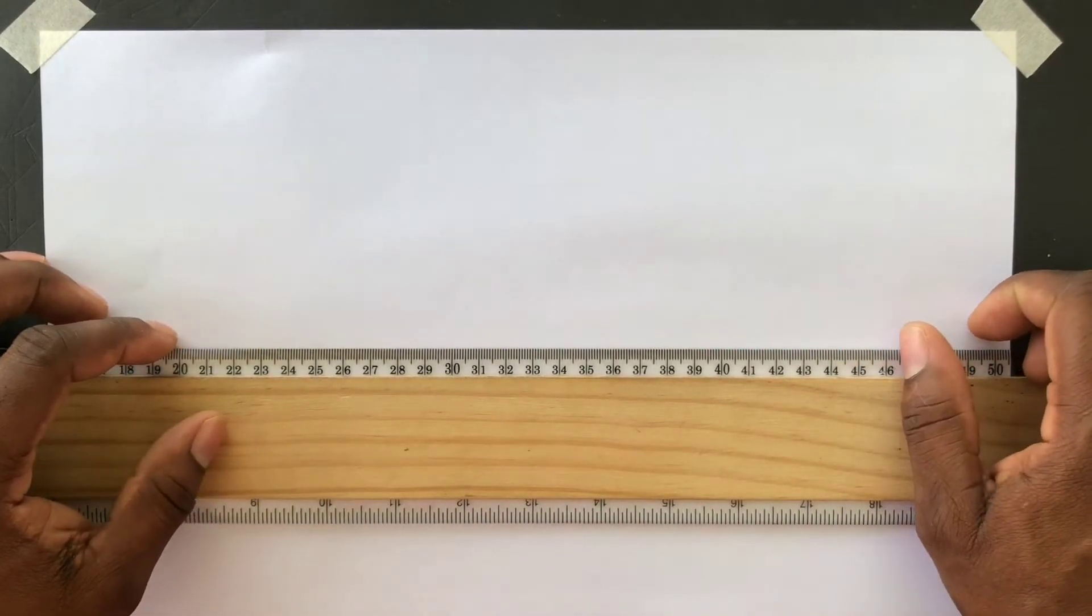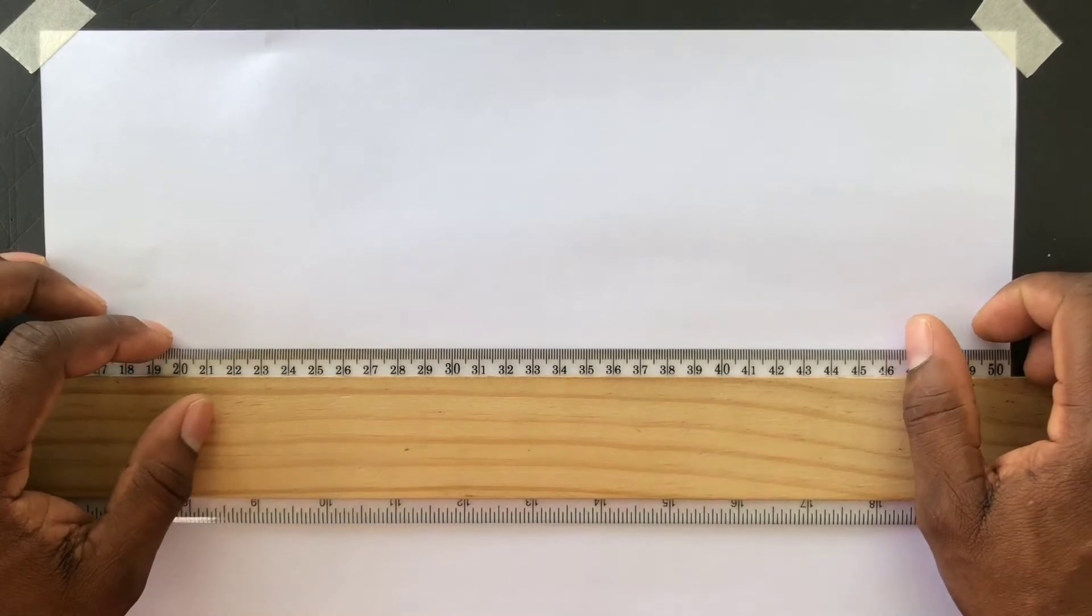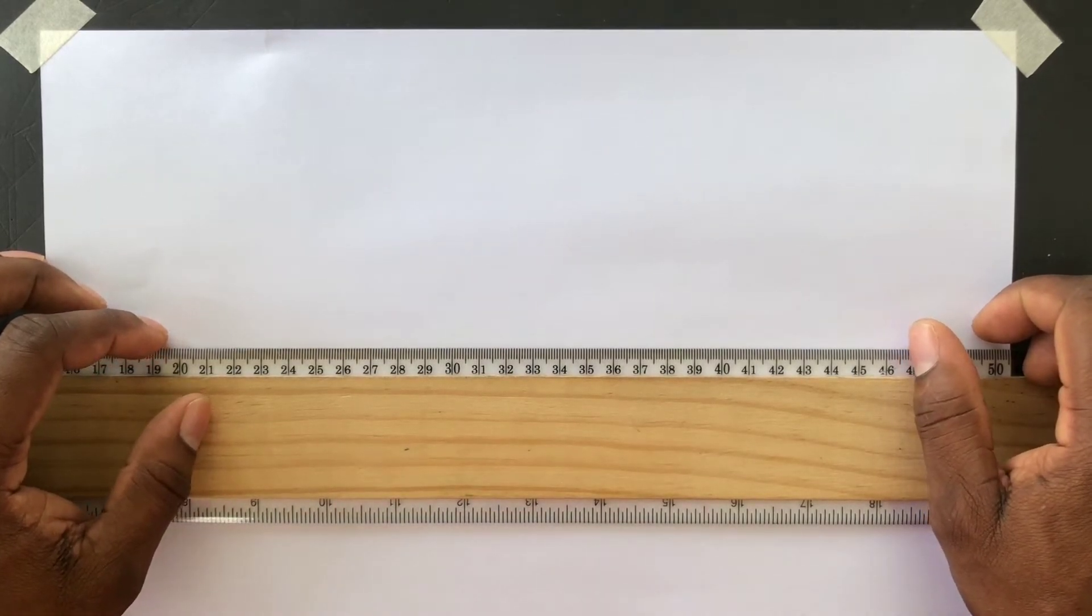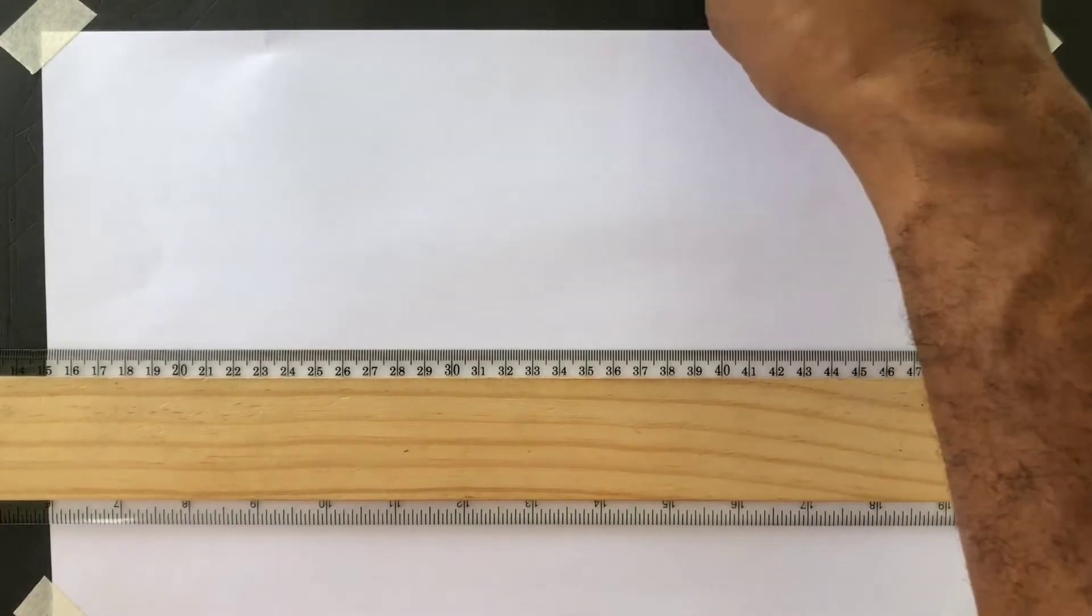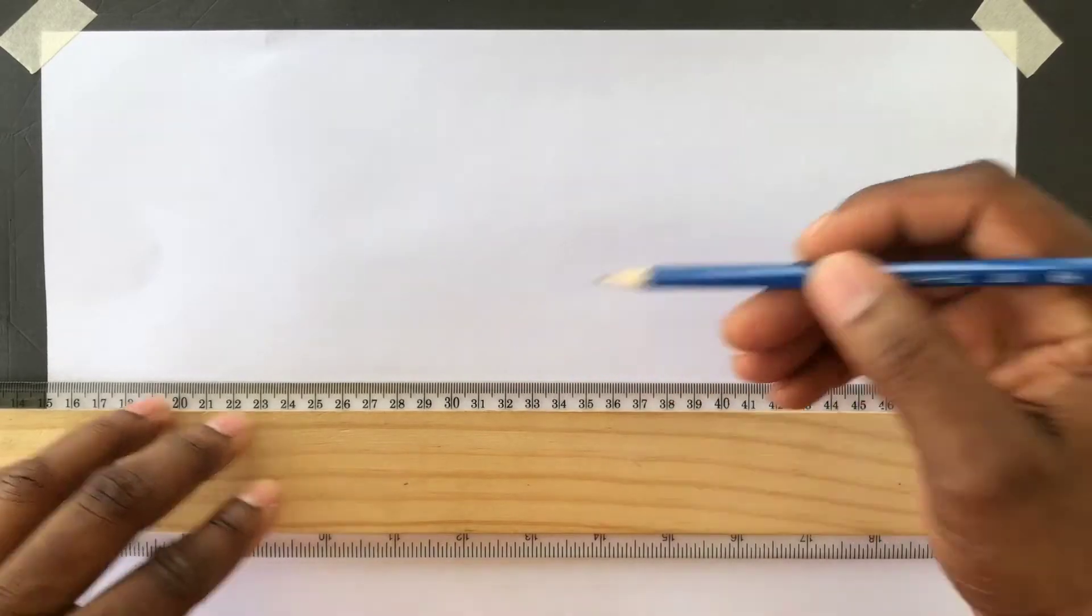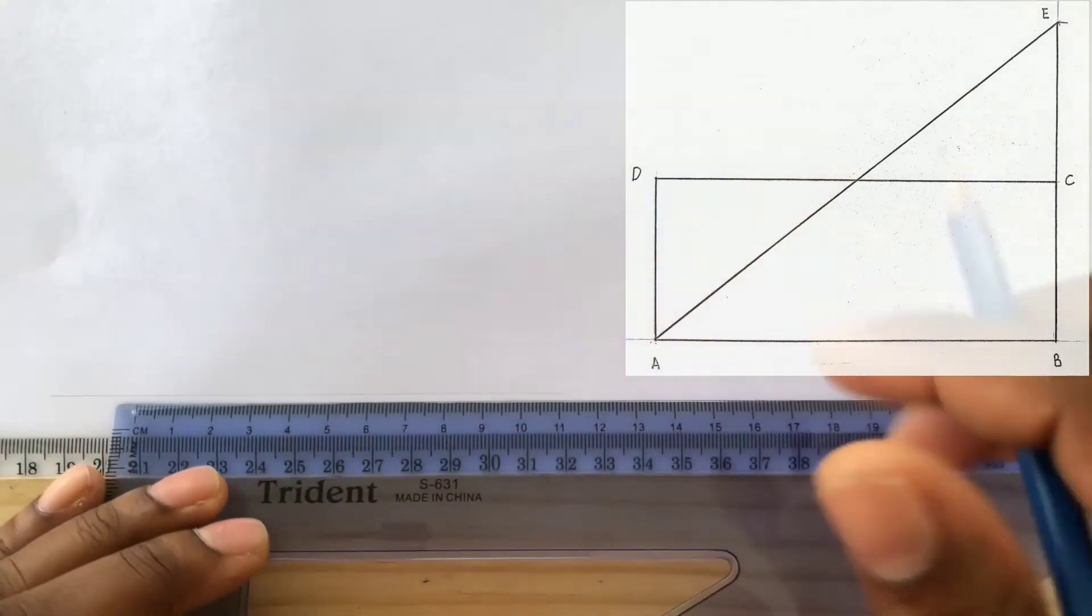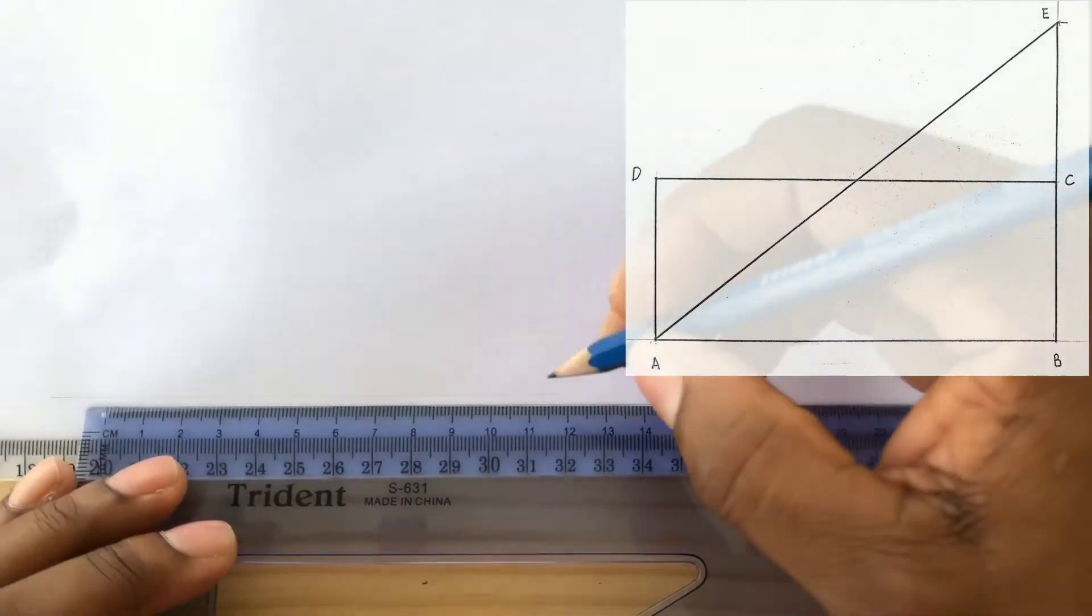You will first draw a horizontal construction line using your T-square. Remember, construction lines are thin and light. Identify 100 millimeters on this line.